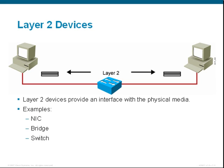Layer two, or your data link layer, is responsible for formatting data so that it can be transmitted, and it's also responsible for having an address so that two different devices on a network know how to get from point A to point B. Common devices that operate here include your network interface card, which also partly operates within layer one. Another device is the bridge, followed by the layer two or work group switch.